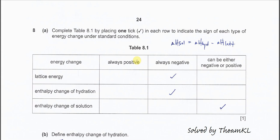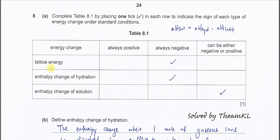Question 8, Part 8. Complete the table 8.1, placing one tick for each row to indicate the sign of each type of energy. In this table there are three types of enthalpy change. The first one is lattice energy. Lattice energy is where gaseous ions combine to form the compound — it's purely bond formation, so it releases energy. Therefore it's always negative.